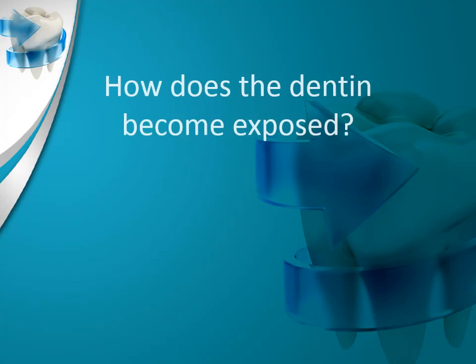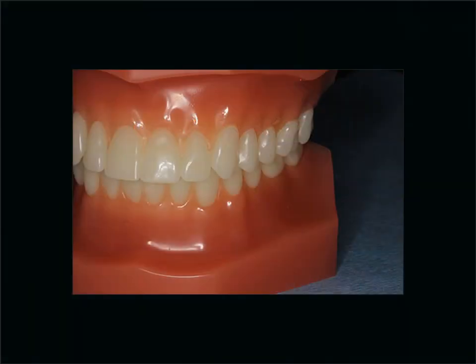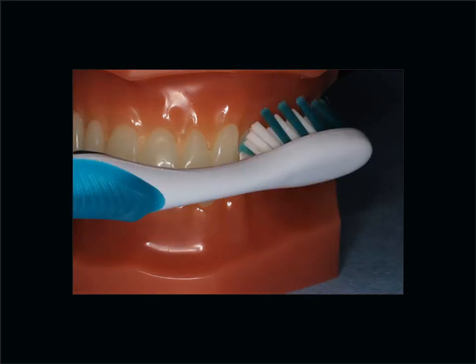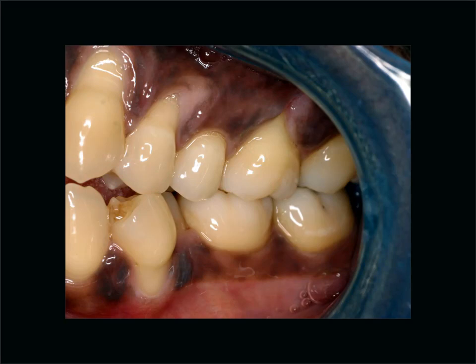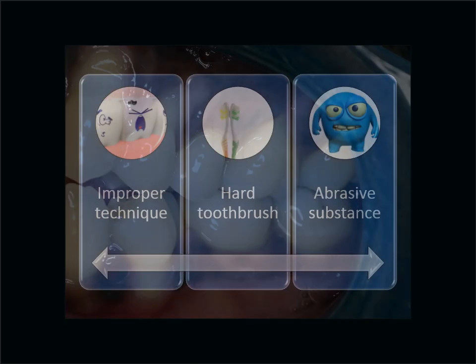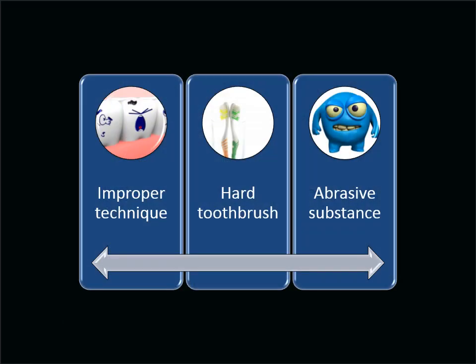You may be asking yourself: how does the dentin become exposed? One of the more common reasons revolves around tooth brushing. Although all surfaces of a tooth are brushed, brushing at the gum line or cervical aspect of the tooth lends itself to causing gingival recession and therefore exposure of the root structure. Improper brushing or using abrasive substances when brushing can actually remove tooth structure at the cervical area and cause the dentin to become exposed.